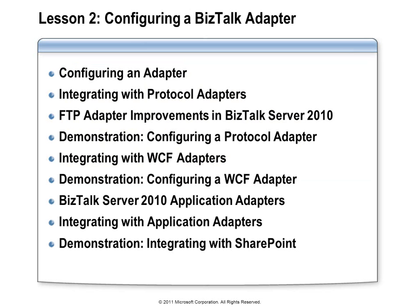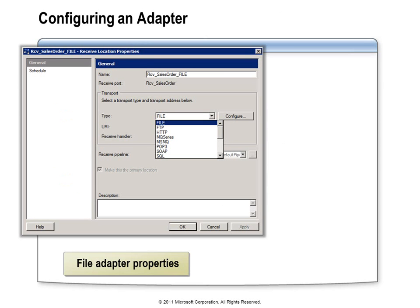Now that you have background on what an adapter is and what they do, let's focus on the adapters that come in the box with BizTalk Server 2010. We'll start with adapter configuration in general and what you can expect to encounter. We've been using the file adapter pretty regularly — its properties are self-explanatory for the most part. We've been configuring it to read from our local file system and taking advantage of the file mask. If you need to accept multiple file extensions, you would need to create a separate receive location for each extension.